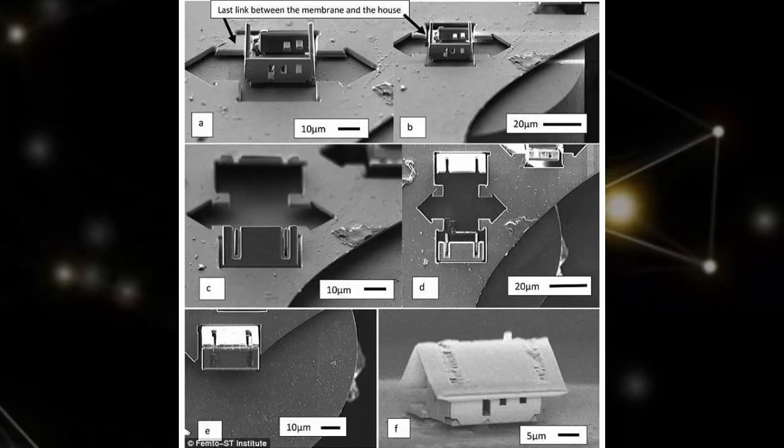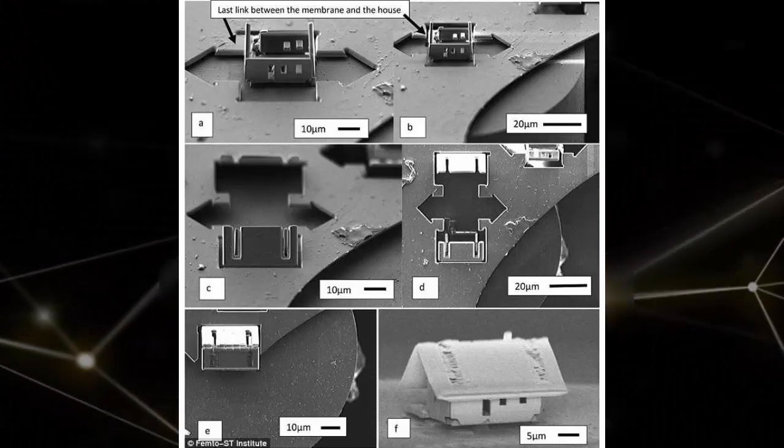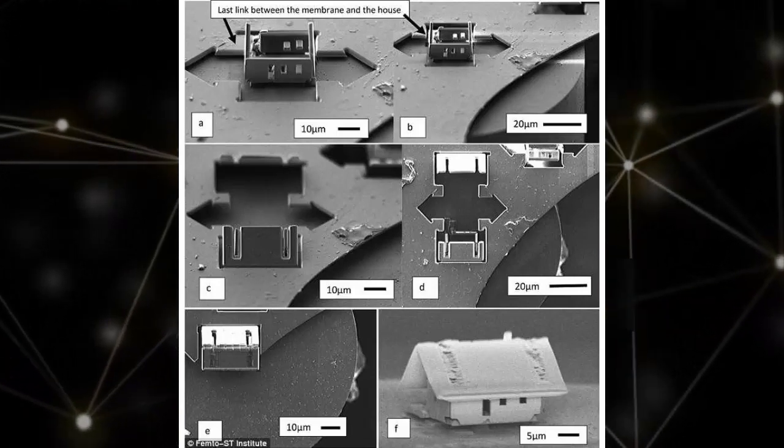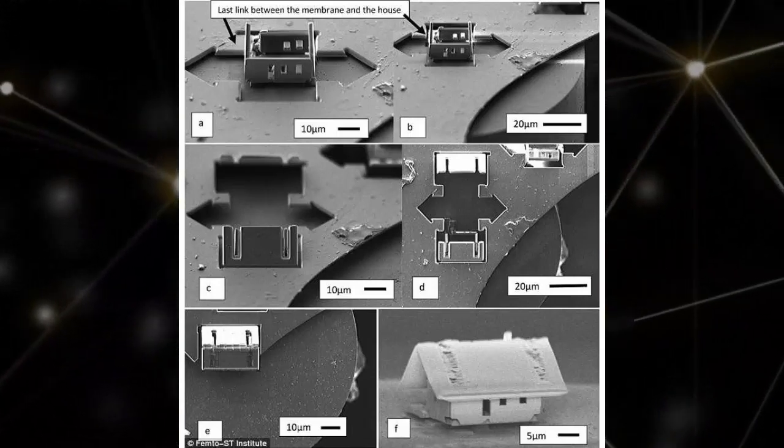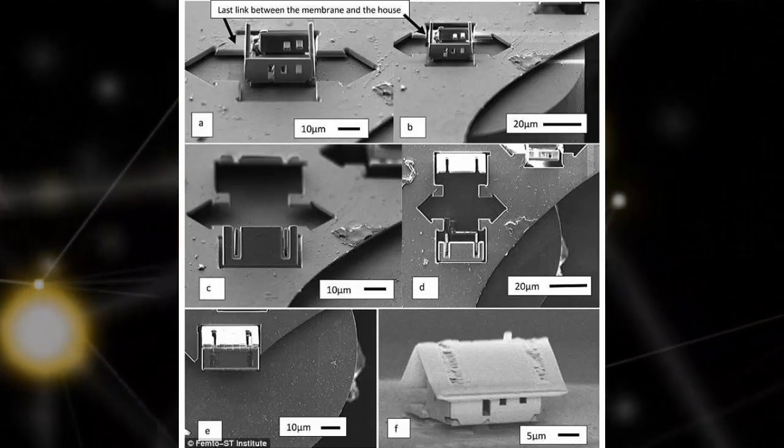In this new type of nanolab, cutting, etching, folding, assembling, and then welding thin membranes of silica on top of a cleaved optical fiber, or production of micro and nanostructures like the micro house, are possible, according to the study.